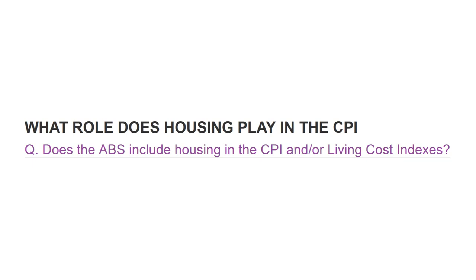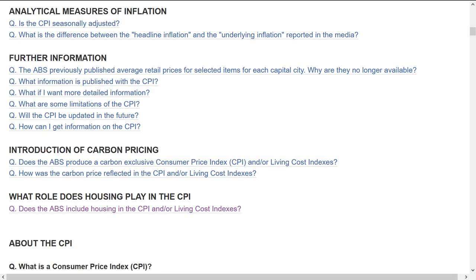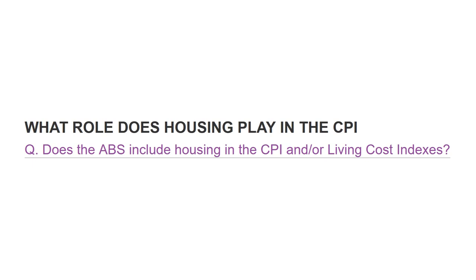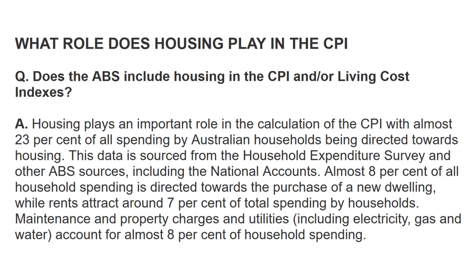Yes, that's the very last question. Either it was the most recent question the ABS added to this FAQ, or they simply don't want people to easily find the answer to this important question. In my opinion, shouldn't 'further information' be at the bottom? Wouldn't that make more sense? Anyway, in answering the question — does the ABS include housing in the CPI and/or living cost indexes, the least important question apparently — they reply: 'Housing plays an important role in the calculation of the CPI, with almost 23% of all spending by Australian households being directed towards housing.'